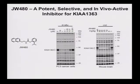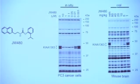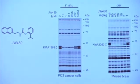This enzyme is a doublet for a different reason - it's glycosylated. And it works in vivo: with oral administration, you could completely block 1363 in the brain, where it happens to be highly expressed. So it's a very versatile and selective compound.